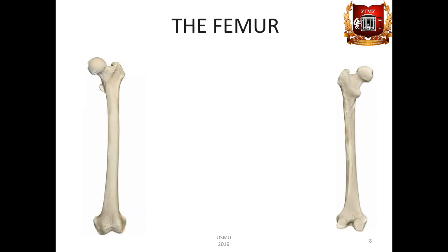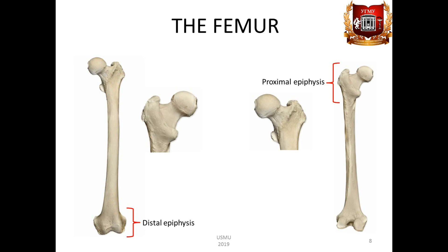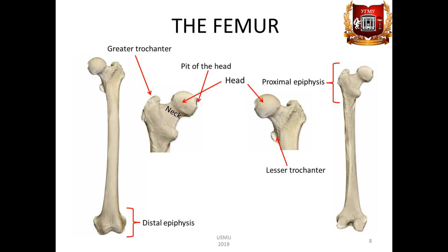The femur has a body and proximal and distal epiphysis. The proximal epiphysis is represented by a spherical head, caput osis femoris, and the neck, collum osis femoris. The head is directed medially. There is a small pit on its surface, fovea capitis osis femoris, which is the place of attachment of the ligament. At the junction of the neck into the body, there are two rough processes, the greater and lesser trochanters, trochanter major and trochanter minor.